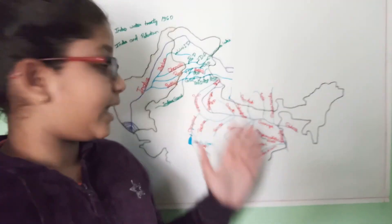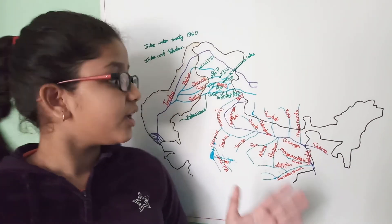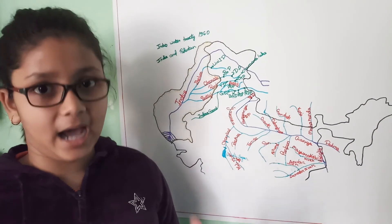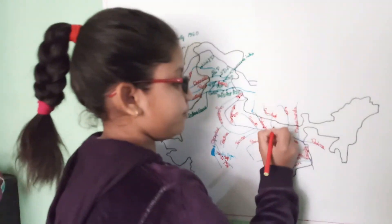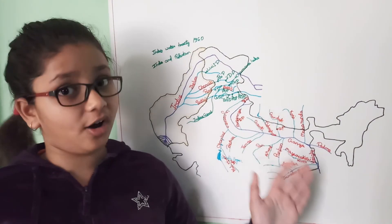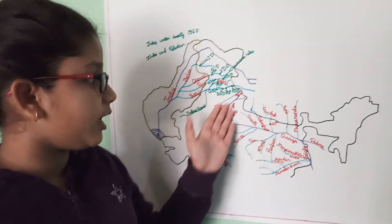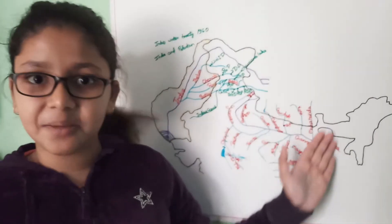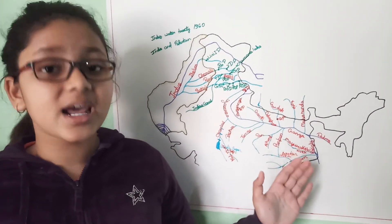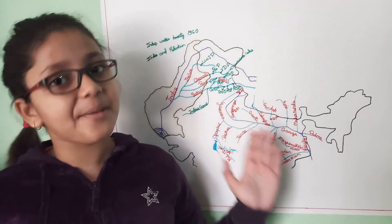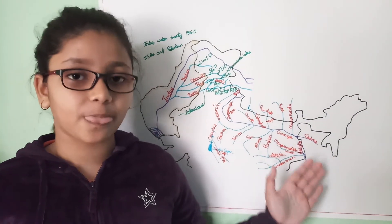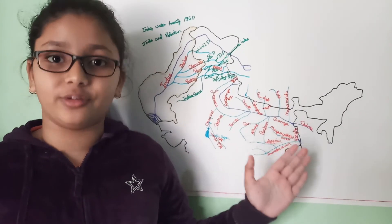Then comes the Gandak project, which is constructed on the Gandak river in Bihar. It is a joint project of Uttar Pradesh, Bihar, and Nepal, and its hydroelectricity is produced at Surakpura in Nepal.